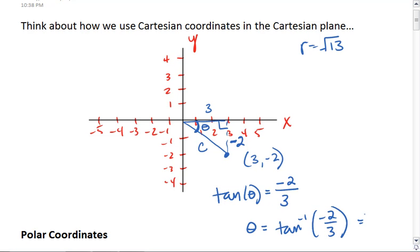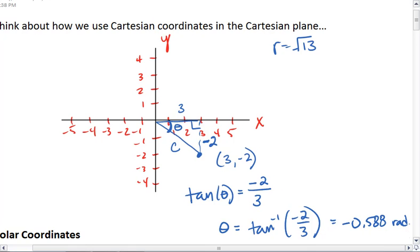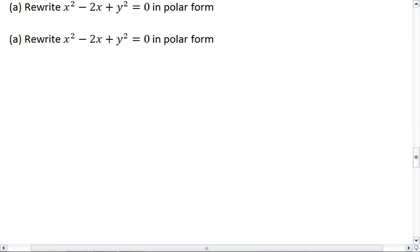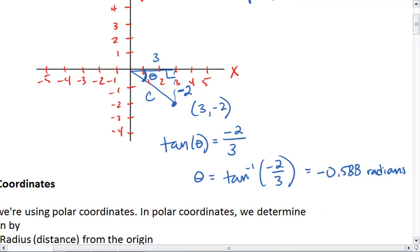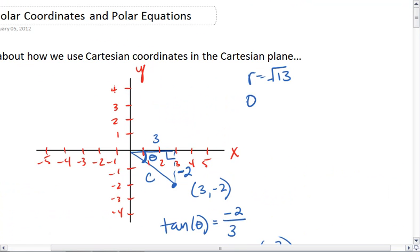We can plug that into our calculator. Make sure that you are in radian mode for this. We are going to put this one in radians, or at least I am. And we get negative 0.588 radians. So this is our angle theta, is negative 0.588 radians.